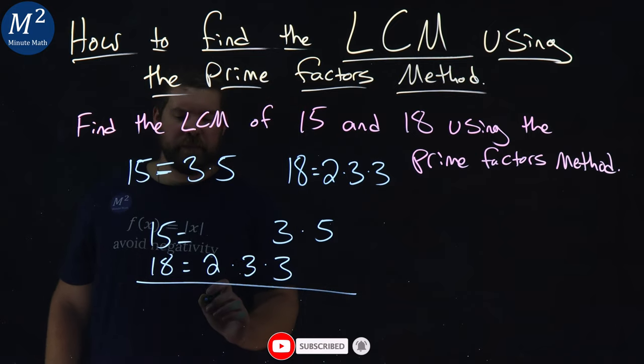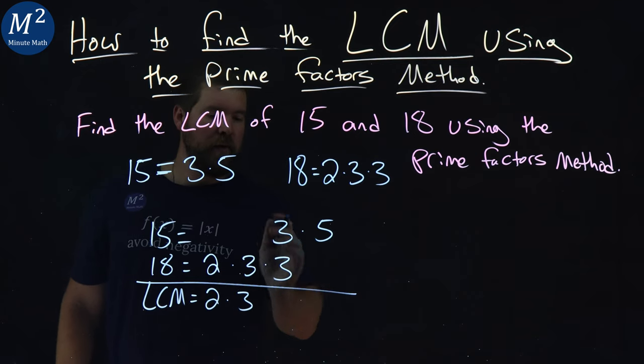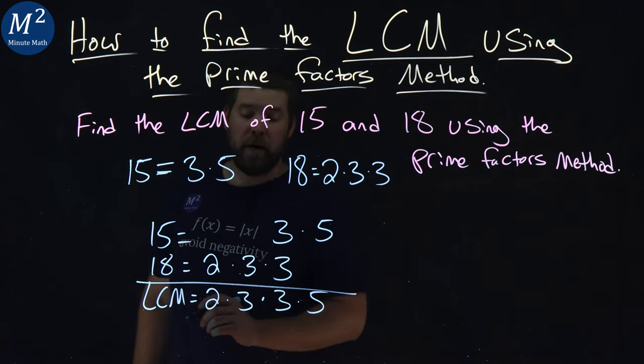Now we're going to go down. We have LCM is equal to 2. We have 1, 3 here. These combined to just be 1, 3, and then 5, right there.